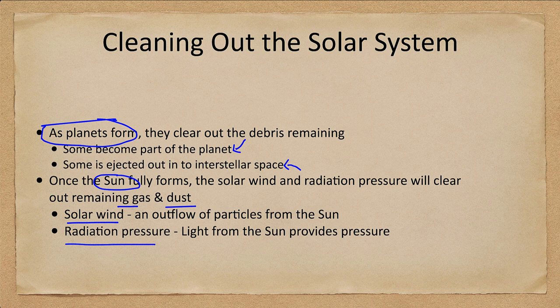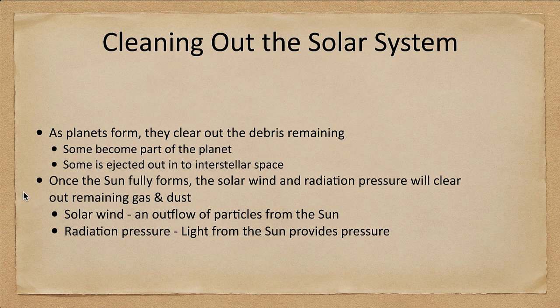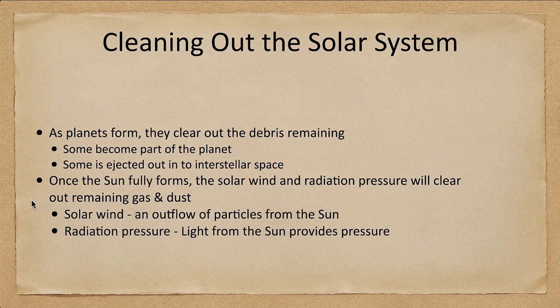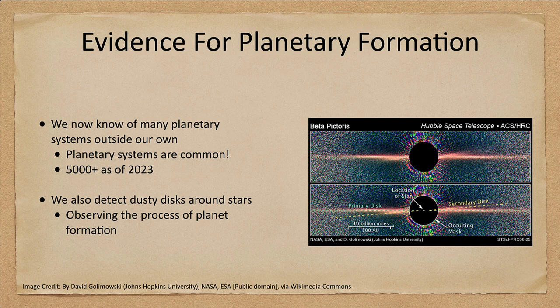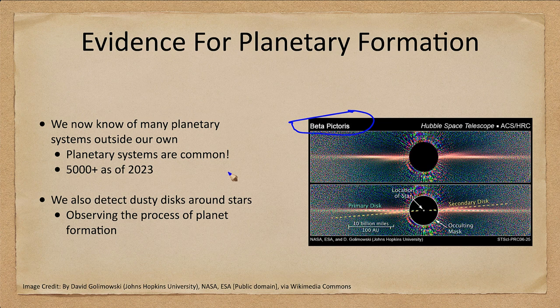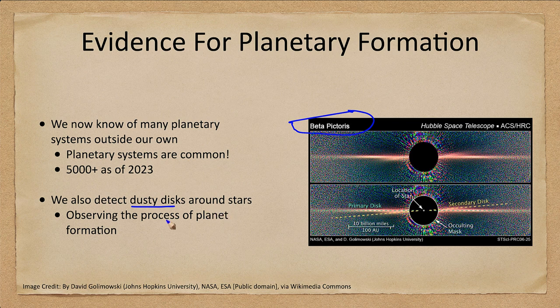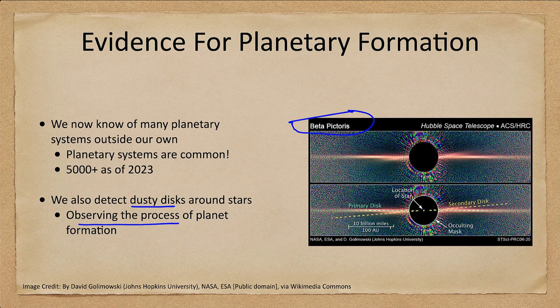What is the evidence for this? Obviously we cannot go back and look at what our solar system looked like 5 billion years ago as it was forming. However, we can look at other solar systems and we see some of those. This is an example of one, known as Beta Pictoris. This is a Hubble Space Telescope image. The star itself has been masked out and we see a dust disc. We can see dusty discs around other stars. We are observing that process of planet formation. We will never get to see it finish, it takes millions and millions of years for it to actually complete, but we can see different stages of it.